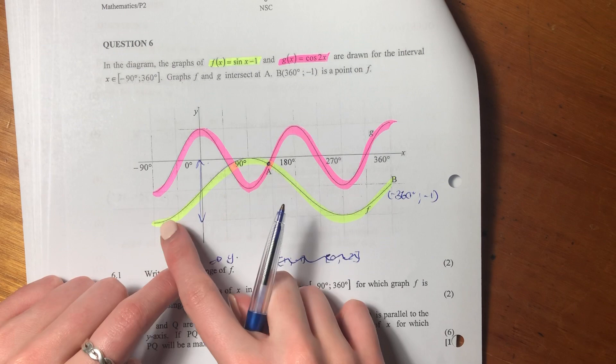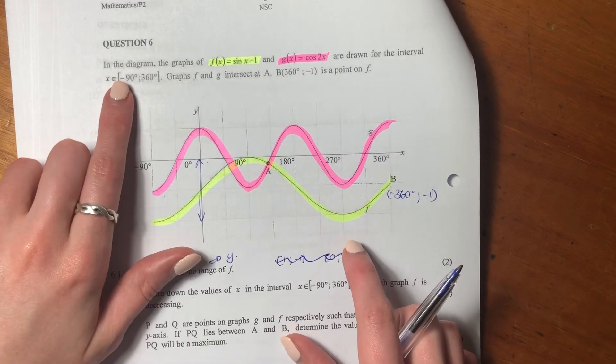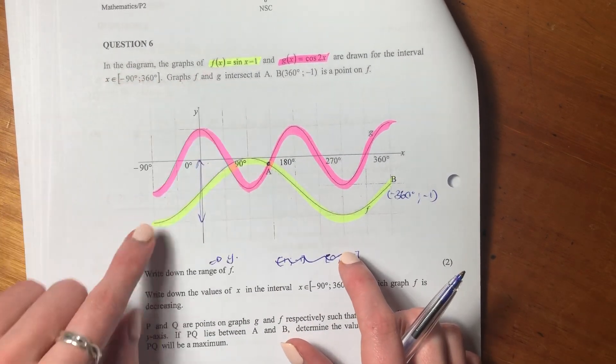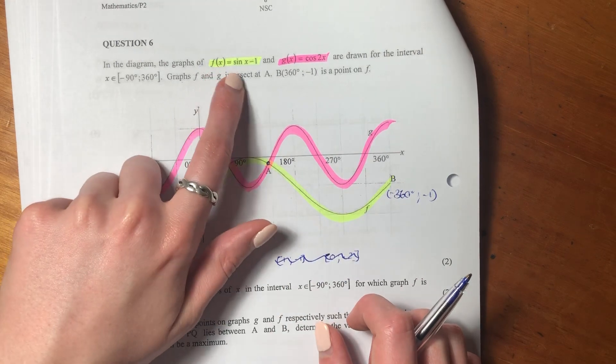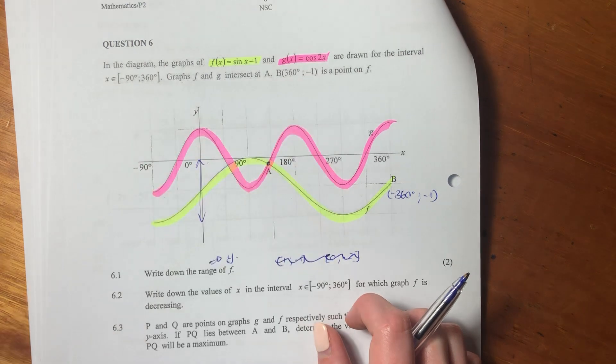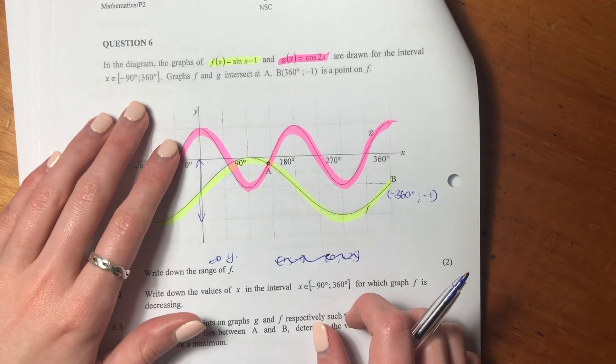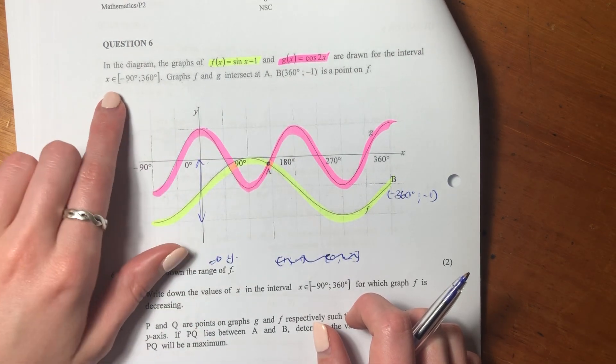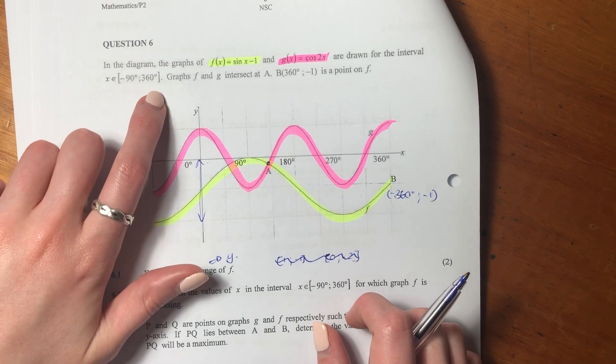Question 6 looks at your trig graphs. Specifically, in the diagram, the graphs of f(x), I've drawn it here in yellow, which equals sin x minus 1, so it's a shifted sine graph, and g(x), which equals cos 2x, are drawn for the interval negative 90 degrees to 360 degrees.